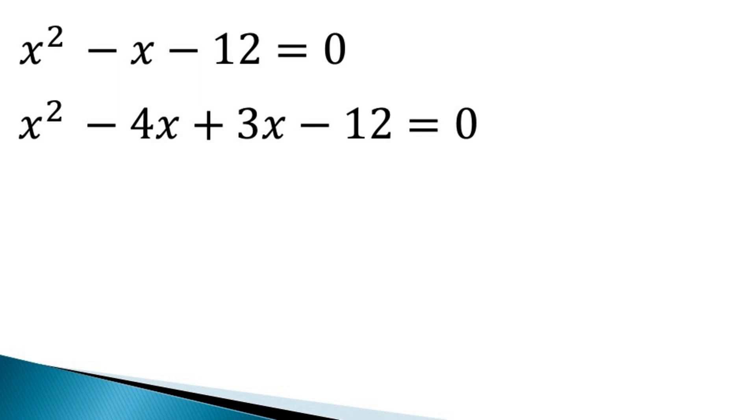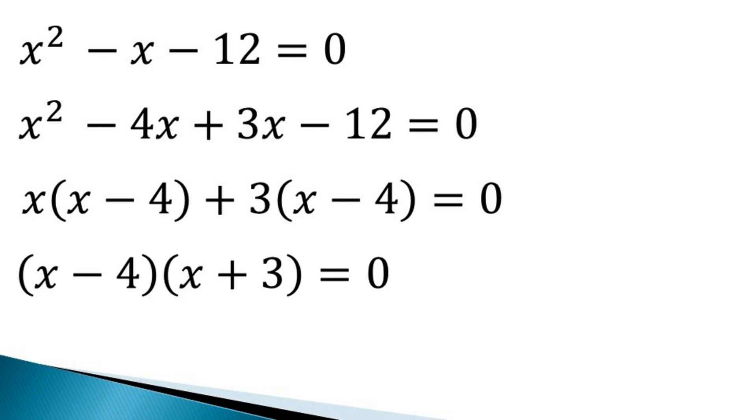And take common x from the first two terms and 3 from the last two terms to get x into x minus 4 plus 3 into x minus 4 is equal to 0. Now we take x minus 4 common from whole of the equation to get (x - 4)(x + 3) is equal to 0.